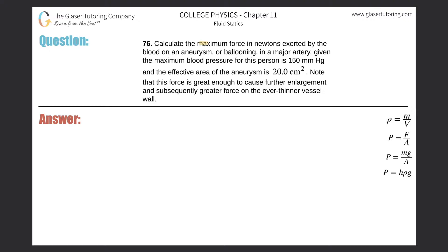Number 76: Calculate the maximum force in newtons exerted by the blood on an aneurysm or ballooning in a major artery, given the maximum blood pressure for this person is 150 millimeters mercury and the effective area of the aneurysm is 20 squared centimeters.